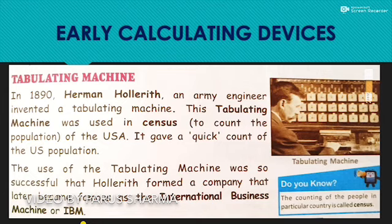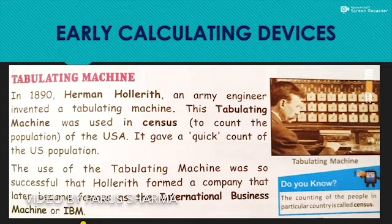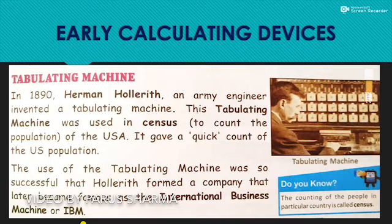Then we have another early device — the Tabulating Machine, made by Herman Hollerith in 1890. He was an engineer who used this machine to calculate the population in the USA during the World War. When it became famous, he formed a company which is named IBM — International Business Machine — which you may have heard of nowadays.